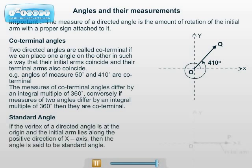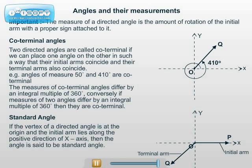Standard angle: If the vertex of a directed angle is at the origin and its initial arm lies along the positive x-axis, then it is said to be a standard angle.